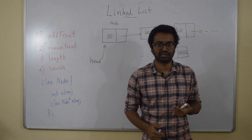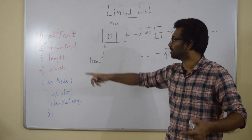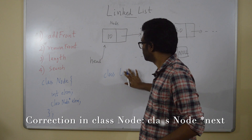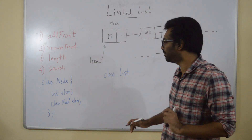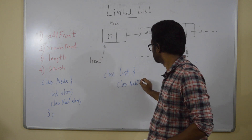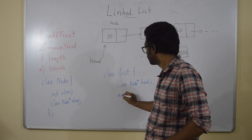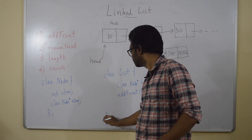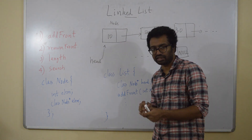The linked list class will have a head pointer of type class node star, and all the functions. I'll call it class list, because the user of our list need not know whether it's a linked list or an array. The list class has a function add — `add(int)` — and similarly there will be other functions like remove, length, and search.